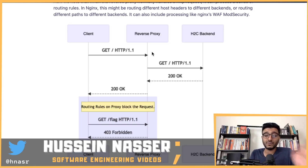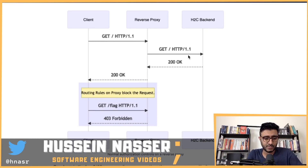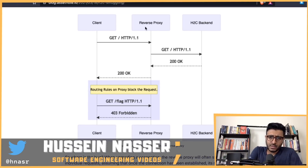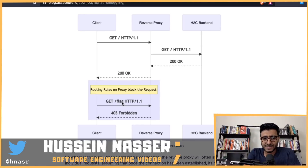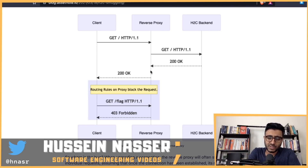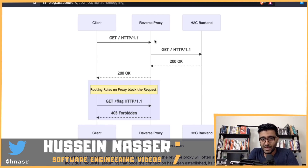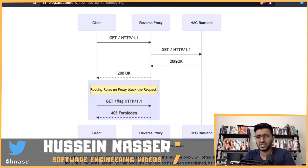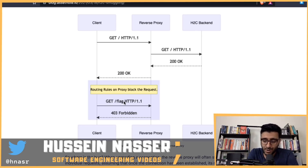Here's a simple example. There's a reverse proxy, and a path slash flag is blocked - you're forbidden from accessing it from the client; it should only be accessed from the backend. You have a rule in the reverse proxy blocking it. So if you make a normal GET request to root, the reverse proxy forwards it to the backend, which responds back. That's HTTP 1.1. But if you try to go to slash flag, it gets blocked by the reverse proxy - you get forbidden.